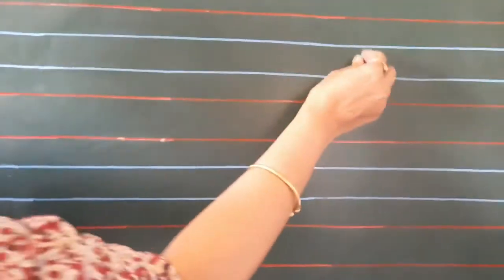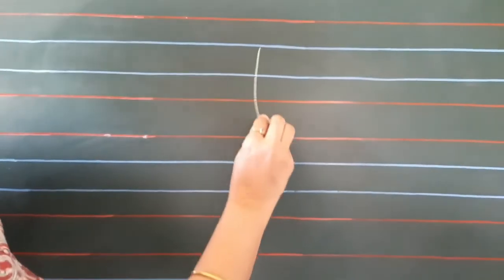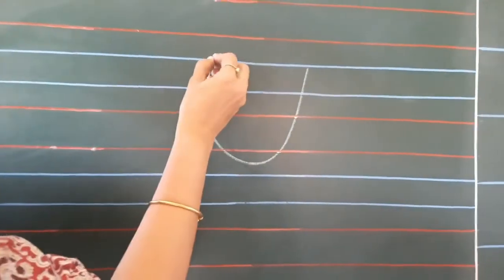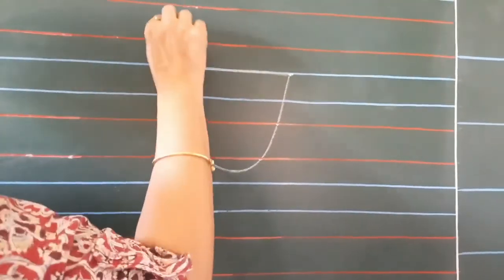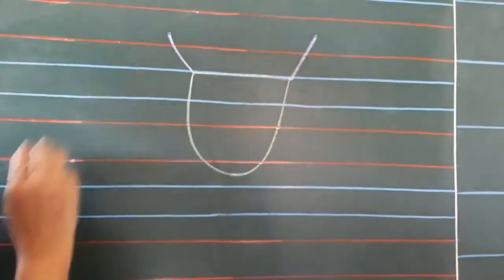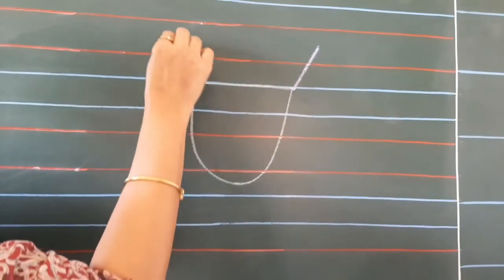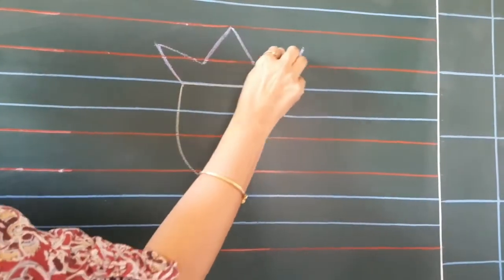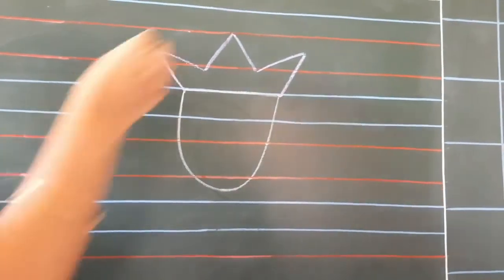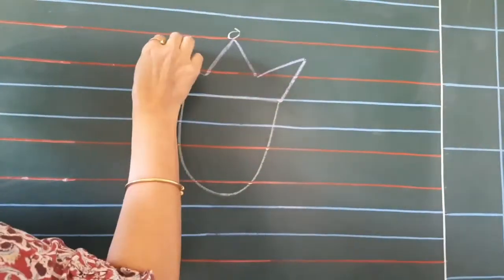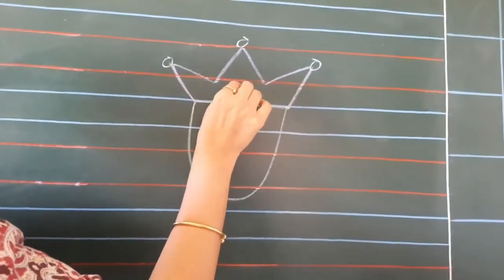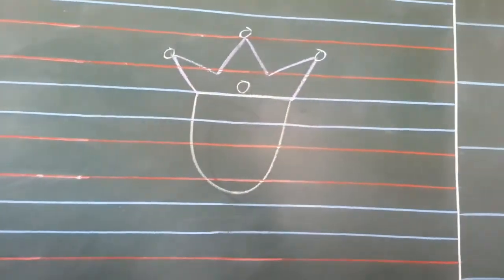So, for that, first of all, we will draw a big U shape, then a sleeping line. Then, we will draw the crown of the queen. So, for that, first you draw two slant lines, and then up and down, and make a crown. And on that, small circles and one circle down.